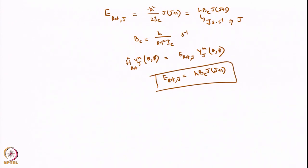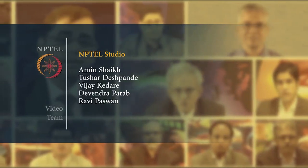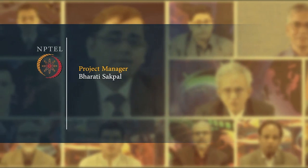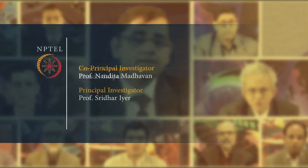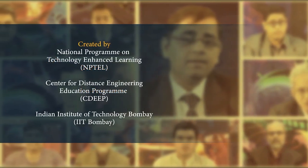So in summary, H_rot acting on Y_j^m(θ, φ) gives E_rot(j)·Y_j^m(θ, φ), and E_rot(j) = h·B_e·j(j+1). This gives us the energy and wave functions for the rigid rotor. We have rotational states with j = 0, 1, 2, and so on, and we will look at the transitions between these states in the next lecture. Thank you.